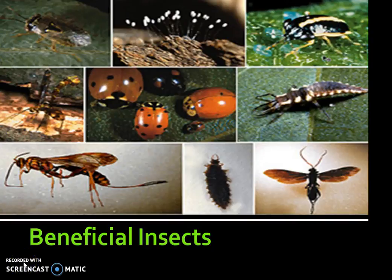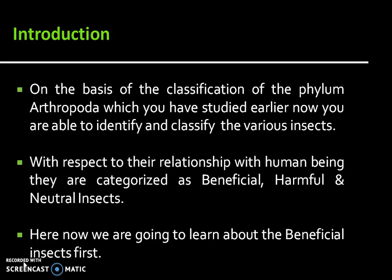Dear students, today we are going to learn about the beneficial insects. On the basis of classification of the phylum Arthropoda, which we have studied earlier, you are now able to identify and classify the various insects. With respect to their relationship with human beings, they are categorized as beneficial, harmful, and neutral insects. Here, we are going to learn about the beneficial insects first.